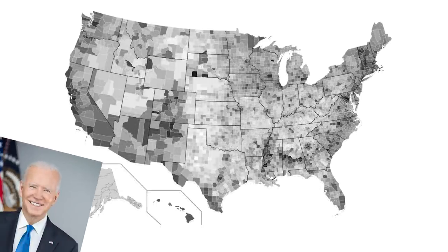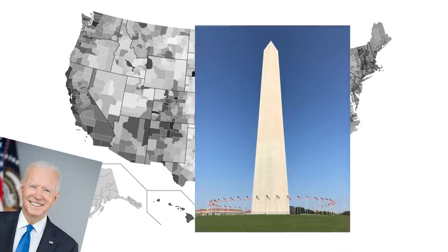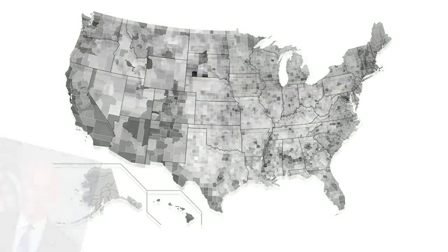Here's Joe Biden's map. You can see pretty distinctly where he did well — like the coasts, by the Mexican border, up into Colorado, and parts of the south. His best county was Ward 7 in Washington DC.